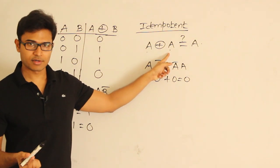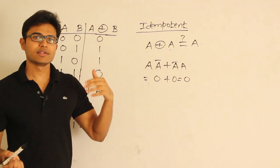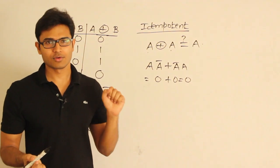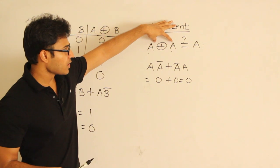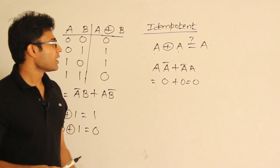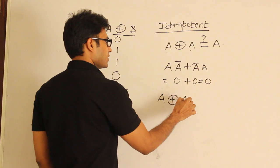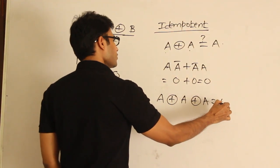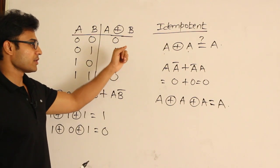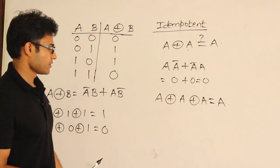You can verify: when A=0, 0+0=0, divide by 2, remainder is 0. When A=1, 1+1=2, divide by 2, remainder is 0. So you always get 0, confirming XOR is not idempotent. However, A XOR A XOR A does equal A, but since idempotency must hold for all cases, this single example doesn't make it idempotent.